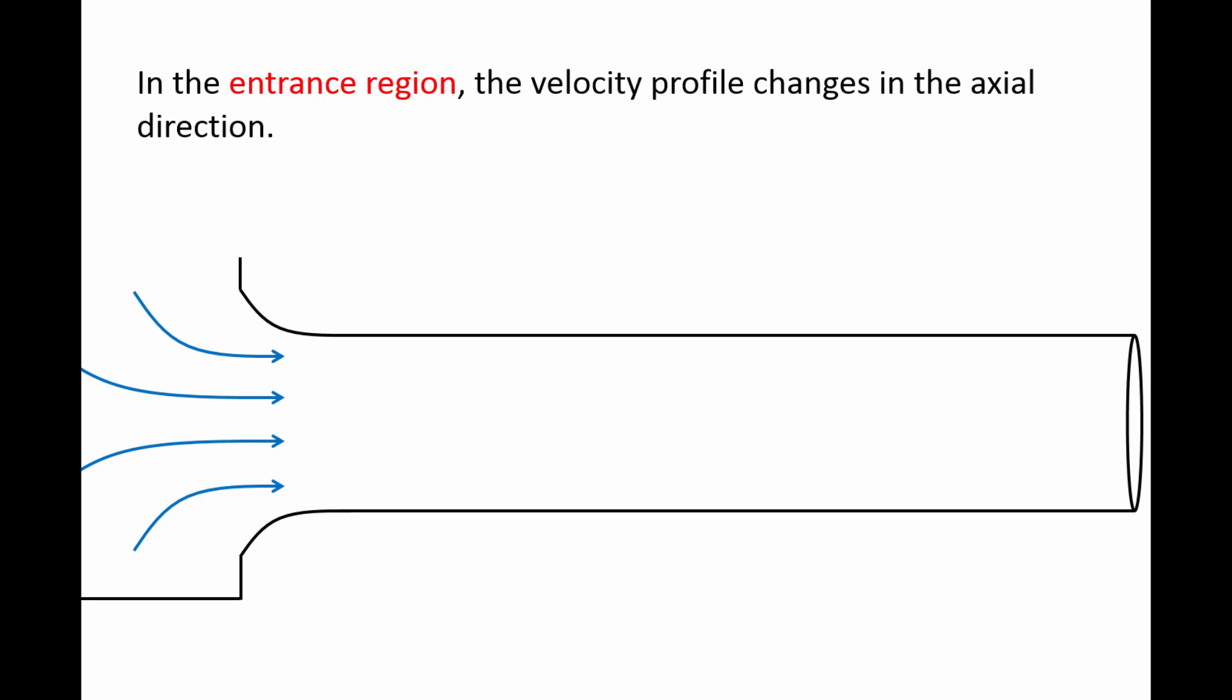Here we have a circular pipe connected to a large reservoir. When the fluid first enters the pipe, the velocity profile will appear almost completely uniform and flat. However, the fluid velocity at the walls will be zero due to the no-slip boundary condition. Layers of fluid that are adjacent to the wall will experience shear stress due to velocity gradients and decelerate.